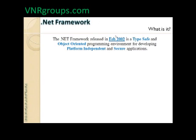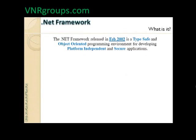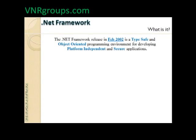We'll start with: what is the .NET framework? The .NET framework was released in February 2002 — that's version 1.0. The .NET framework is a type-safe and object-oriented programming environment for developing platform-independent and secure applications. All the highlighted keywords are critical to understand when defining what the .NET framework is all about.